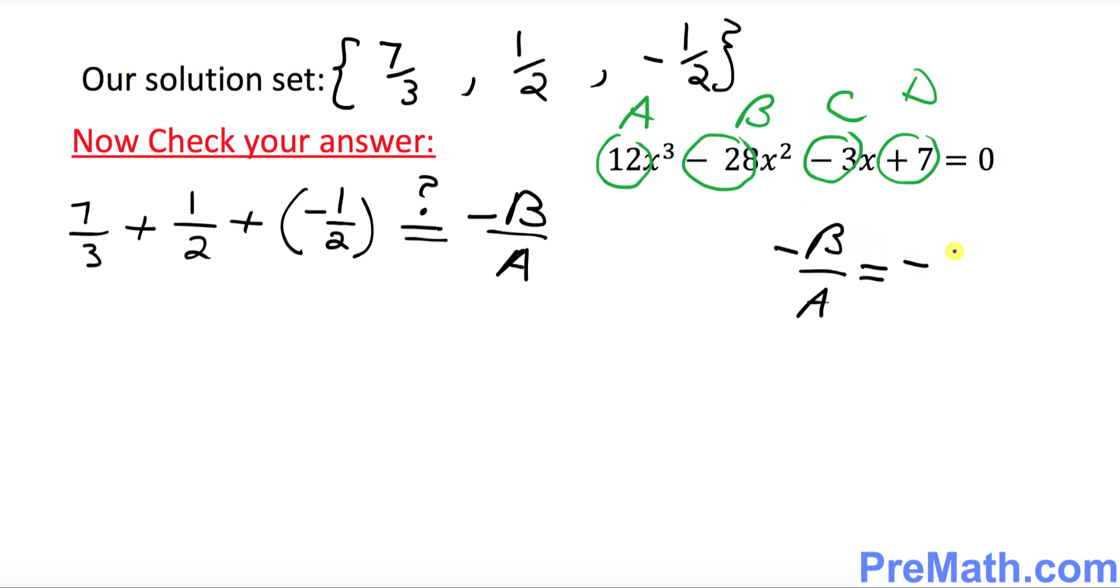So that means minus b over a is going to be simply negative and then your b is negative 28 divided by a is 12. Isn't it? So now negative and negative become positive 28 over 12. If you reduce it, if you divide both sides by 4 and divide it by 4, that's going to give you 7 over 3.